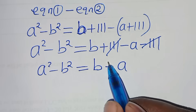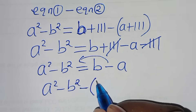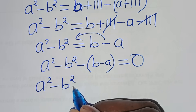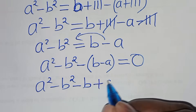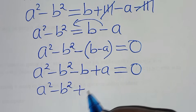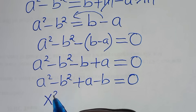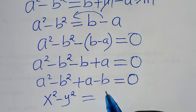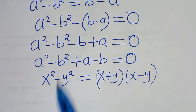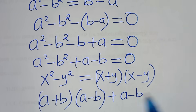The next step is to take b minus a to the left side, so we have a squared minus b squared minus (b minus a) equals 0, which gives a squared minus b squared plus a minus b equals 0. Using the difference of two squares identity, a squared minus b squared equals (a plus b)(a minus b), so we get (a plus b)(a minus b) plus (a minus b) equals 0.